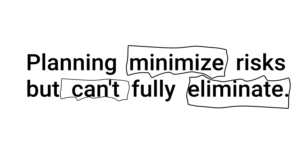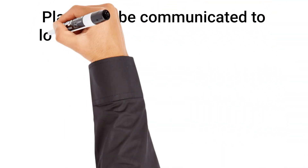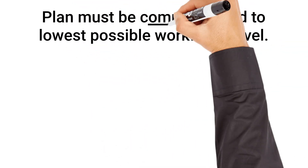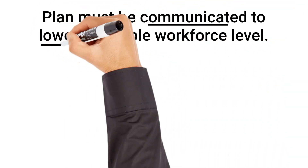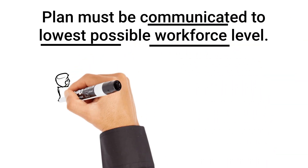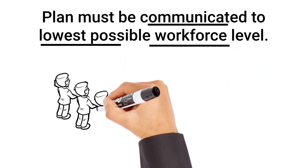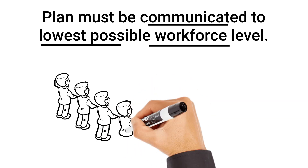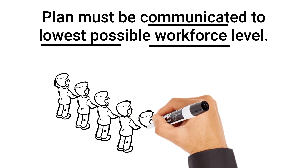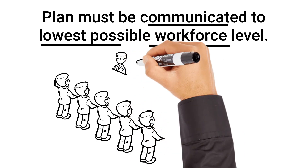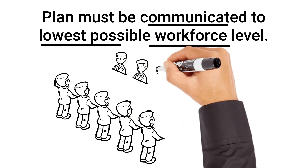A project can achieve its goal only when plans are properly drawn up and implemented. Any plan needs to be translated into action or it becomes meaningless. The planning process must be continuous and communicated to the lowest possible workforce level. It makes sure that everyone constantly knows where the project is going and what could be done. It coordinates the efforts of the various functions, tools, processes, and people.